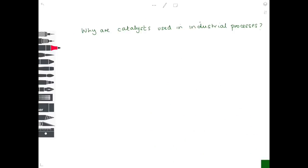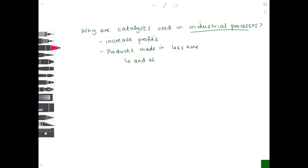Catalysts are used in industrial processes to increase profits: products are made in less time and at lower temperatures, making them cheaper. Importantly, catalysts are unchanged at the end of the process and are not used up.